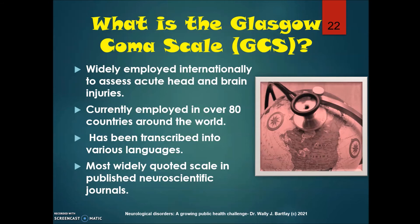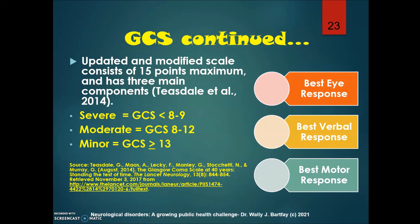The Glasgow Coma Scale is widely employed internationally to assess acute head and brain injuries. It is currently used in over 80 countries and has been transcribed into various languages, making it the most widely quoted scale in published neuroscientific journals. The updated Glasgow Coma Scale consists of 15 points maximum and has three main components: best eye response, best verbal response, and best motor response.